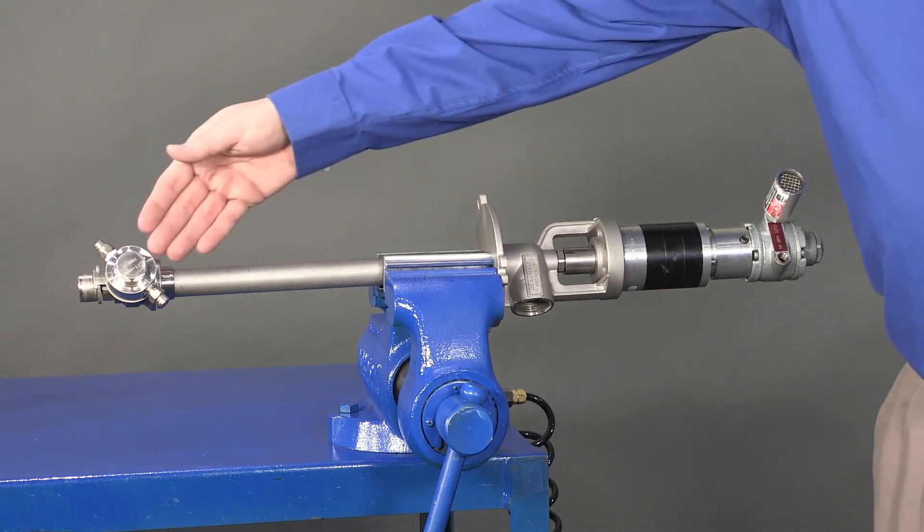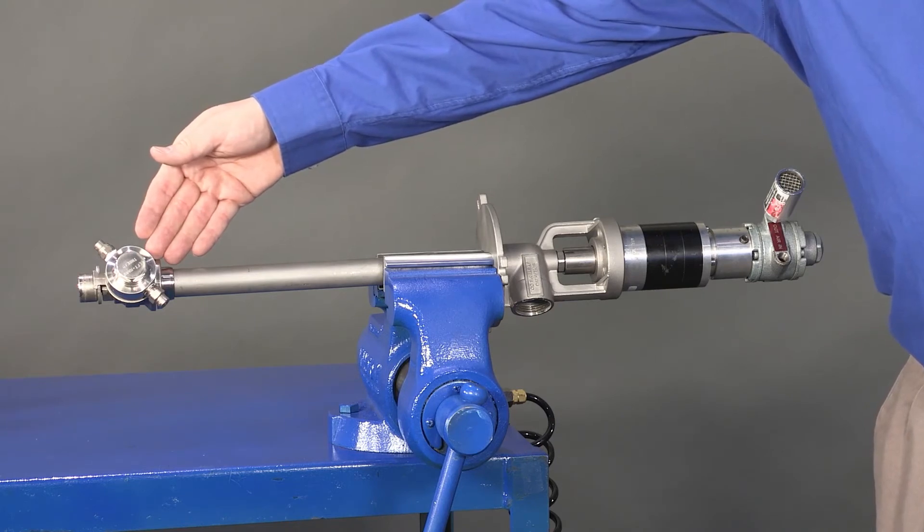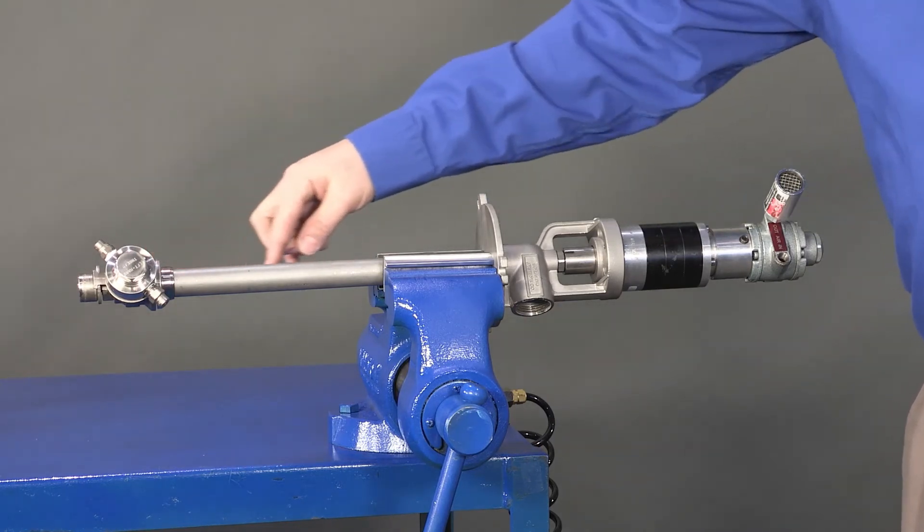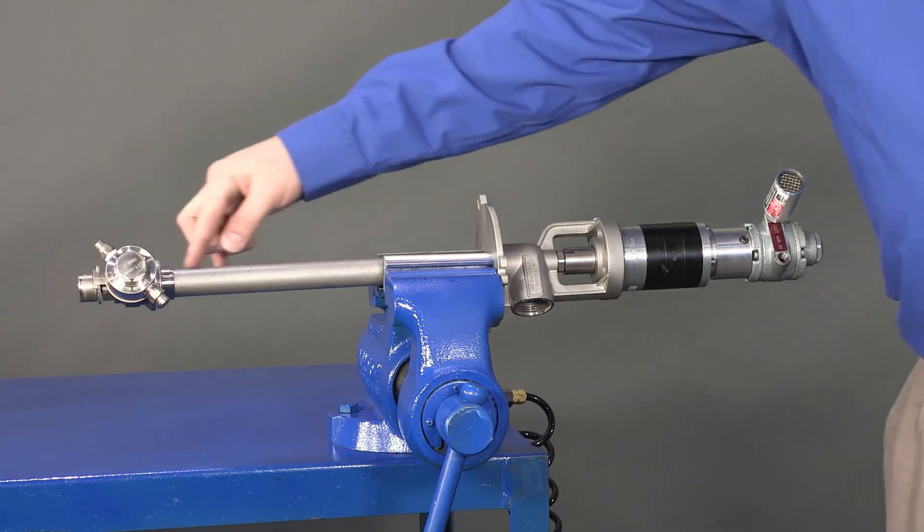Check for obstructions on the gears and nozzle hub that could prevent rotation. Check for bends in the extension tube. Clean off any product residue as necessary.